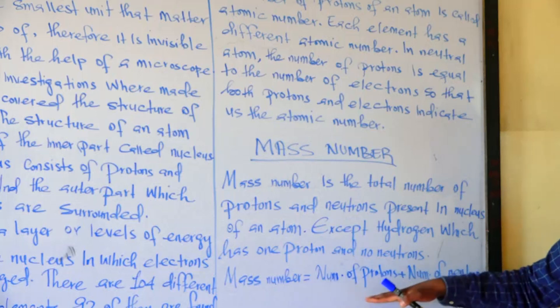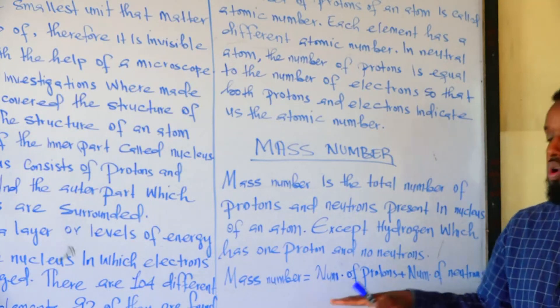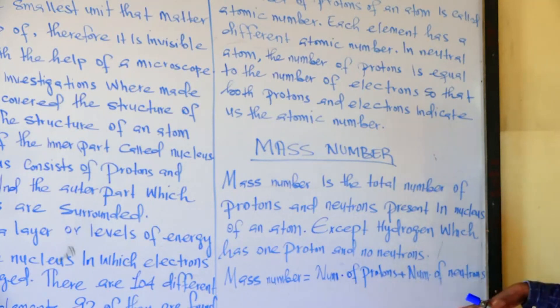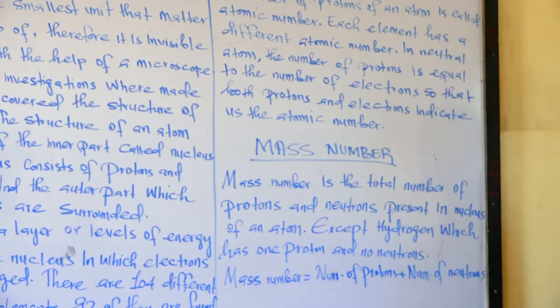The mass number is the number of protons plus the number of neutrons. The proton number plus the neutron number gives the mass number.